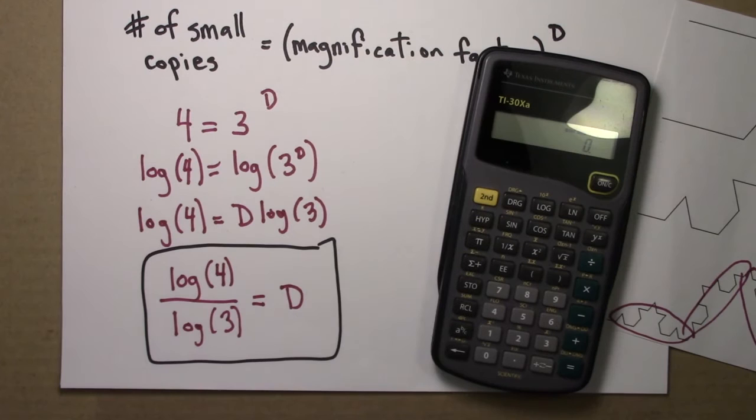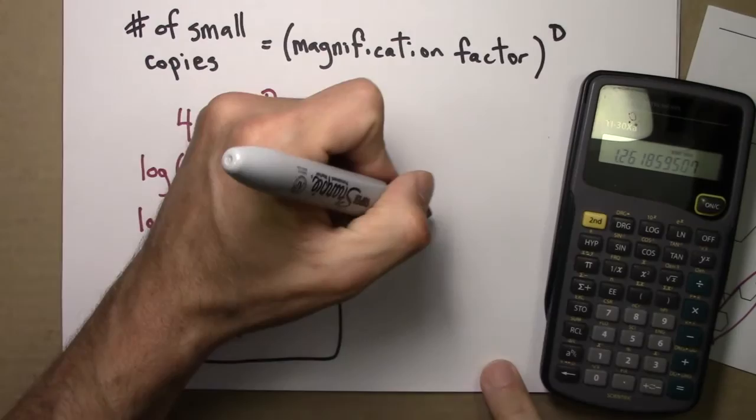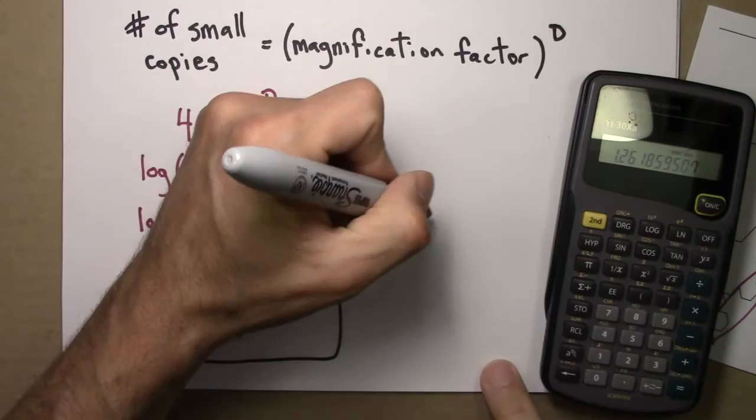And we can get a number for this with a calculator. Four log divided by three log equals around 1.262. So D is approximately 1.262. So the self-similarity dimension for the Koch curve is around 1.262.